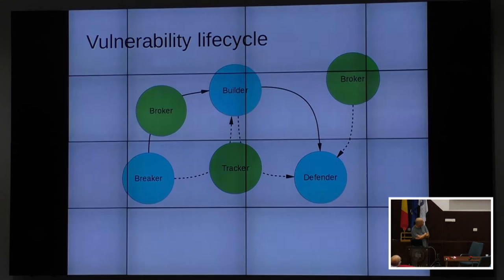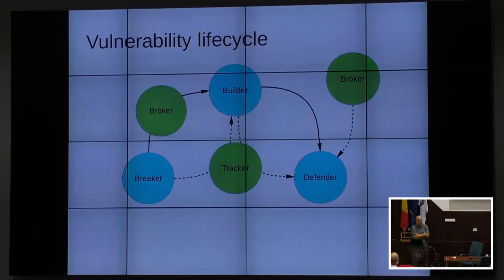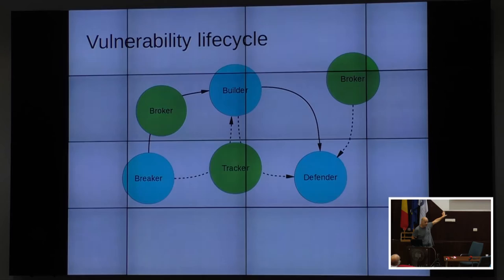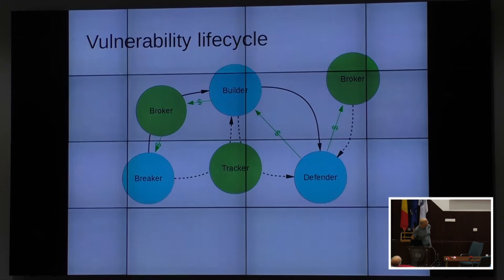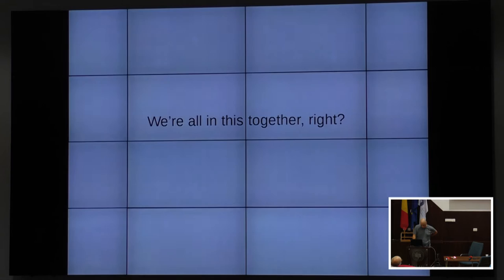Brokers sit between people finding vulnerabilities and people fixing them, filtering out bogus reports from breakers. Statistically, the majority of vulnerability reports are bad — broker companies track very high numbers of invalid reports. Vulnerability feeds on the far right don't interact with the process directly; instead they look at what everybody else is doing and feed that data to defenders. For instance, if somebody reports a vulnerability with no fix available, the vulnerability feed can tell you to adjust your firewalls. If you add money flows into it, all the money comes from defenders' pockets, feeding back to builders, brokers, and the people that found the vulnerabilities.